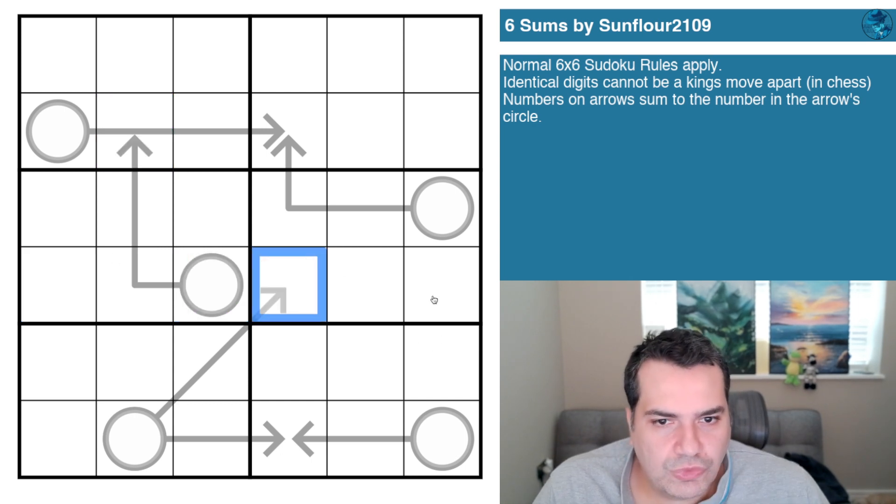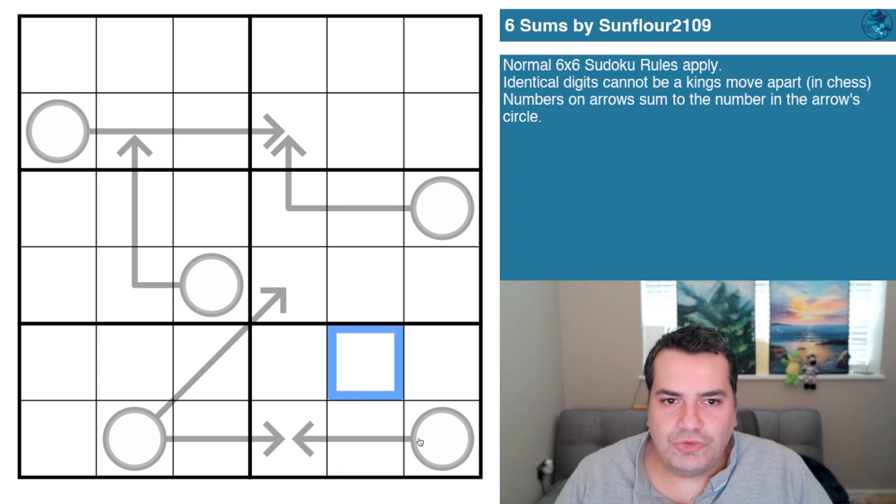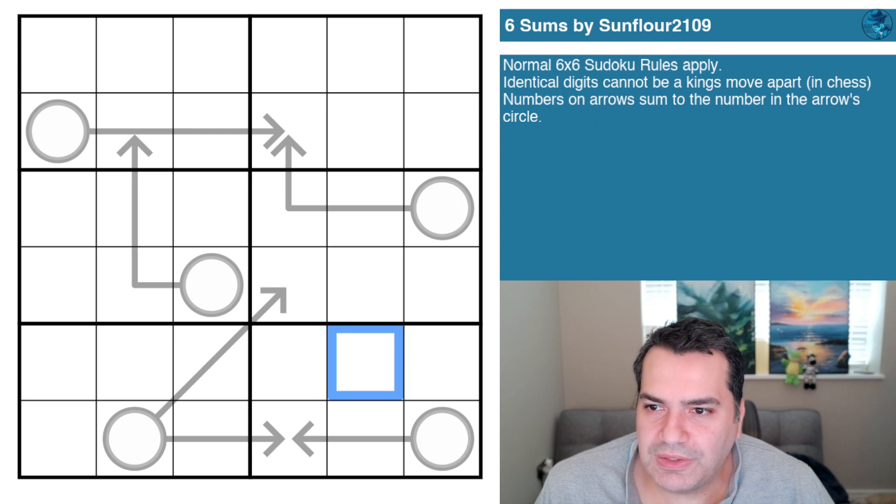Last rule we have is numbers and arrows sum to the number in the arrow circle, so for example this three cell arrow means that these three cells on the shaft of the arrow must sum up to a digit that you would place in this circle. Same for this one, same for that, there's a lot of three cell arrows and same for this one as well. Well if you fancy going back to elementary school with sleuth revisiting your six sums, link will be in the description down below as usual for you to play along.